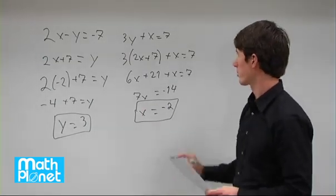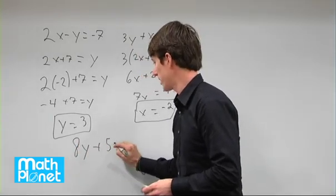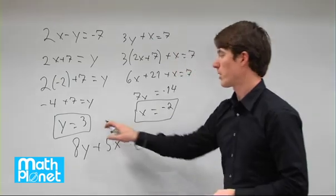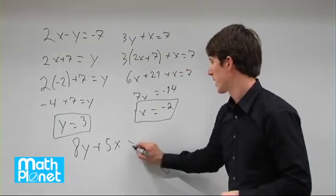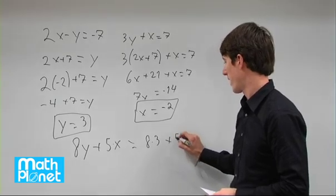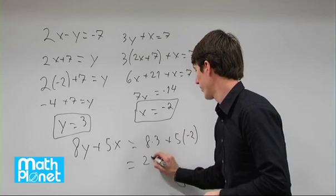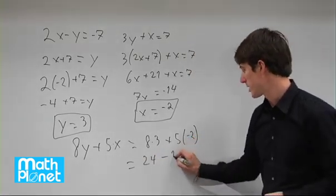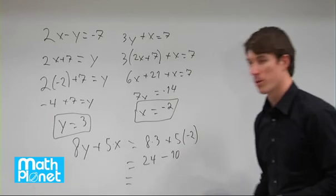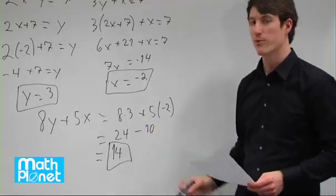Now we need to find the expression 8 times y plus 5 times x. So we can just plug these numbers in and see what we get. We have 8 times 3 plus 5 times negative 2. That equals 24, and 5 times negative 2 is negative 10, so 24 minus 10 is 14. So our final answer is 14.